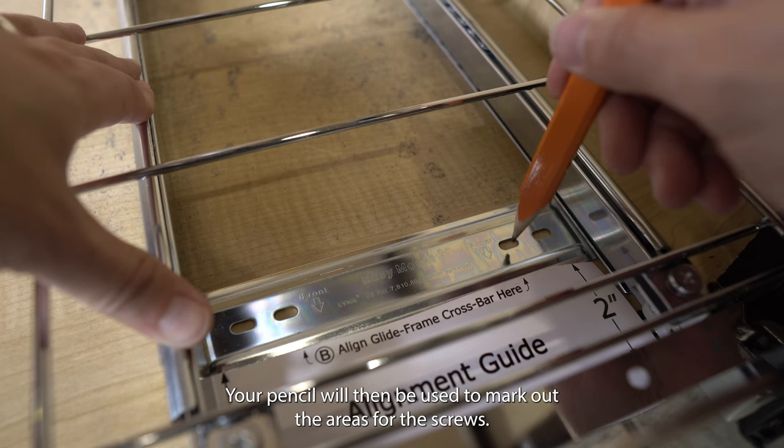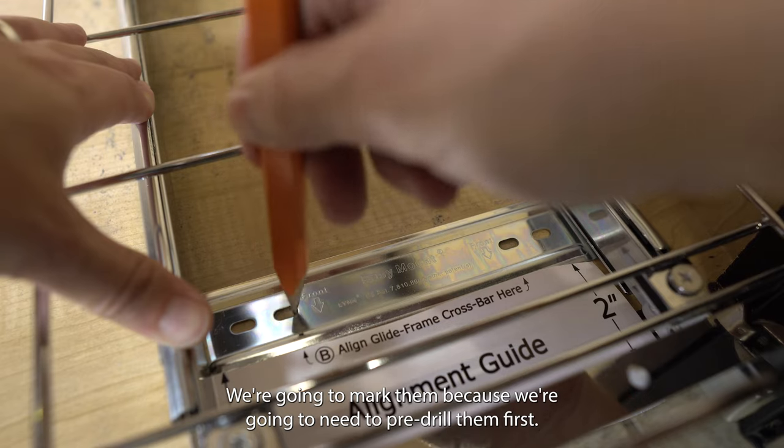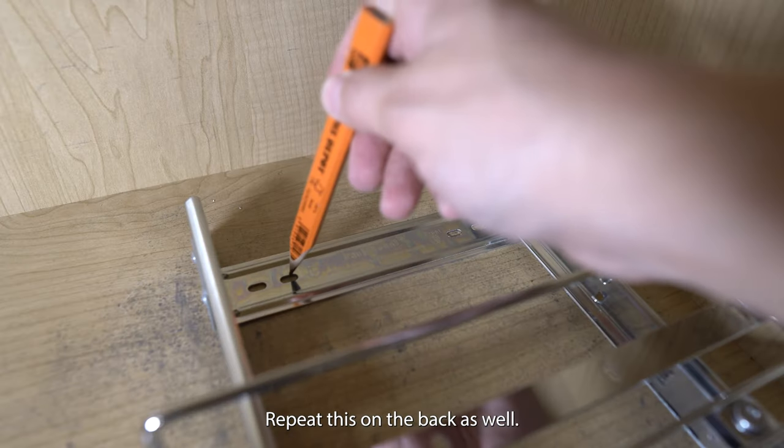Your pencil will then be used to mark out the areas for the screws. We're going to mark them because we're going to need to pre-drill them first. Repeat this on the back as well.